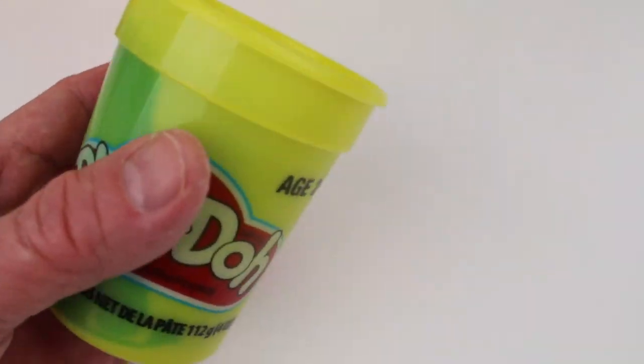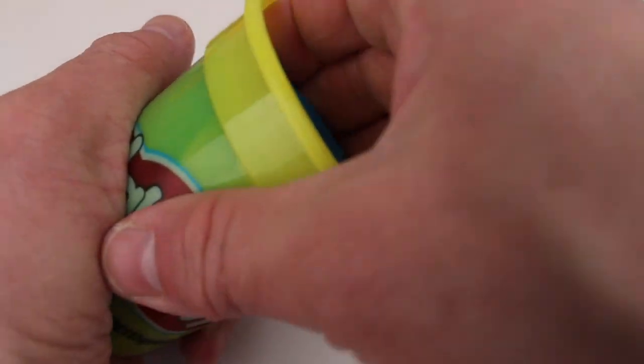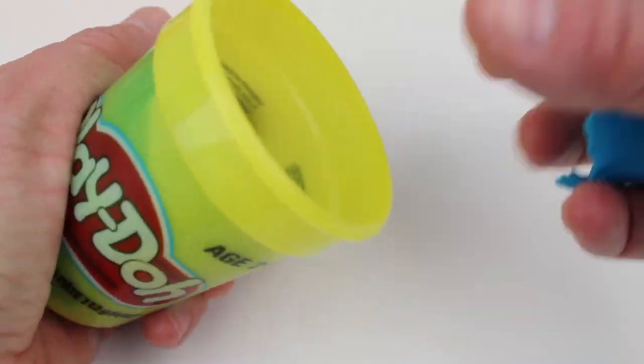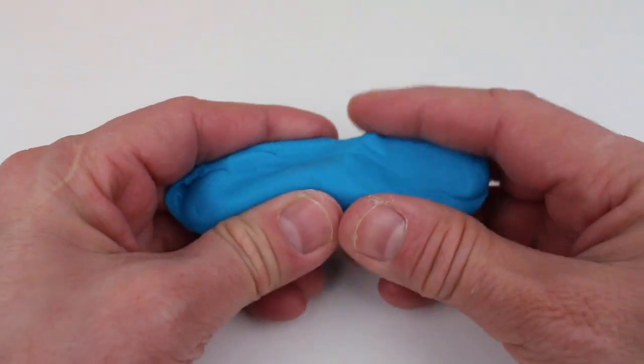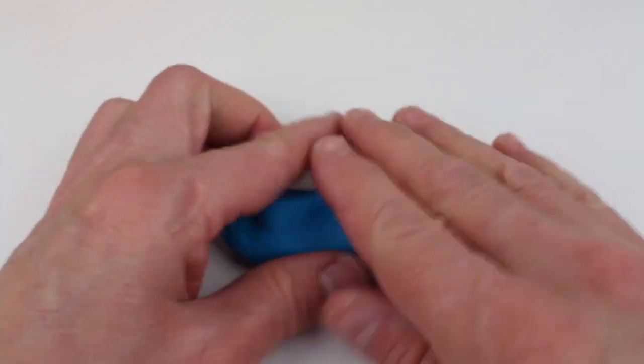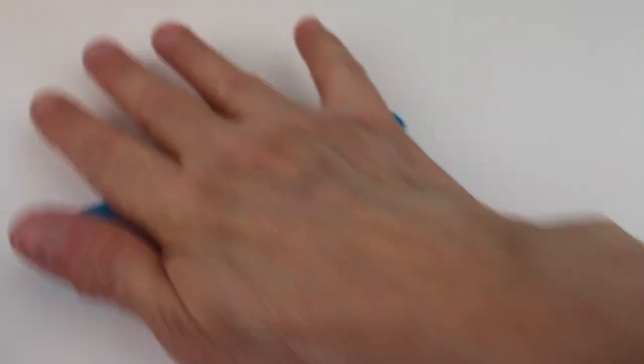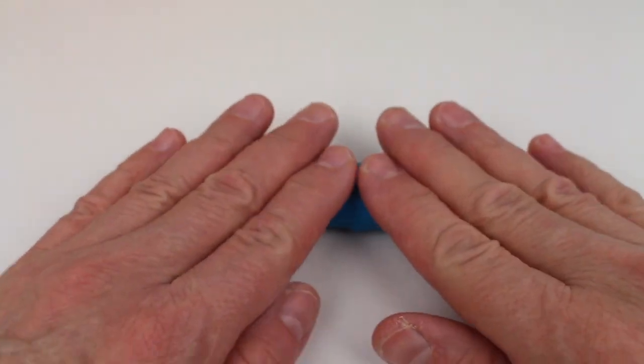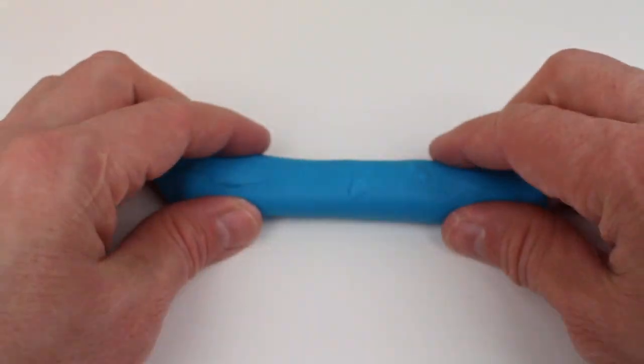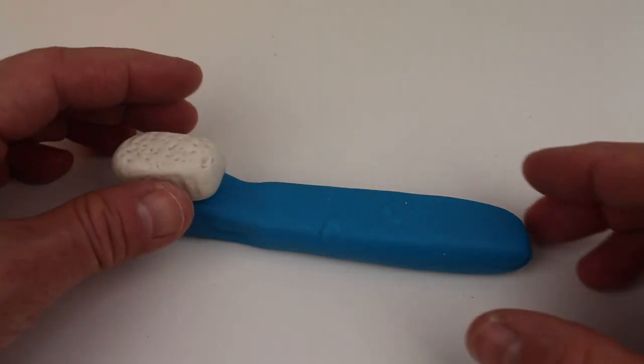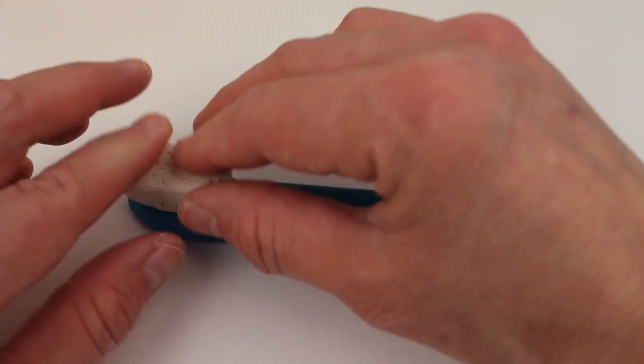Now let's get out another tub of play-doh. Take some blue play-doh to make the handle for the toothbrush. Now we'll squish it and roll it and shape it, and now I'll add it together.